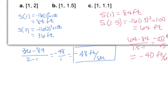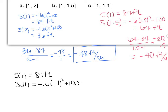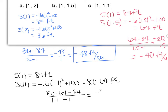For part c, S(1) = 84 feet, and S(1.1) = -16(1.1²) + 100 = 80.64 feet. Average velocity = (80.64 - 84)/(1.1 - 1) = -3.36/0.1 = -33.6 feet per second.